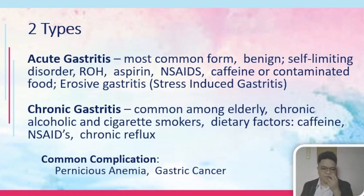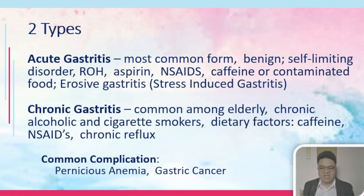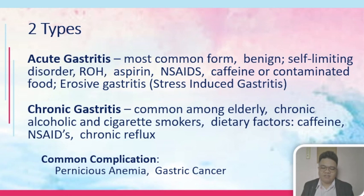One type within acute gastritis is erosive gastritis, which could be stress-induced. For example, a patient about to have an examination may have frequent gastric pain due to stress-induced gastritis. For chronic gastritis, it is common among the elderly and those with chronic alcohol use and cigarette smoking, also attributed to prolonged use of caffeine, NSAIDs, and chronic reflux. The common complications of chronic gastritis are pernicious anemia and gastric cancer, due to constant irritation of the gastric cells.